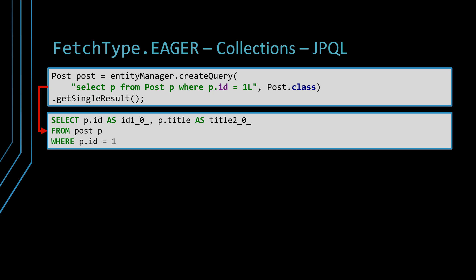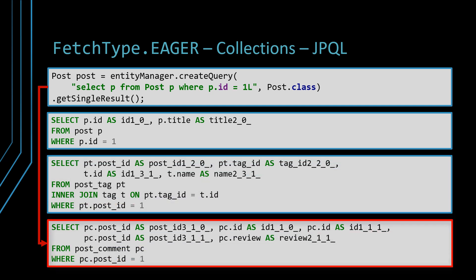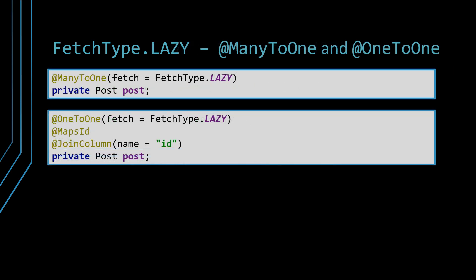On the other hand, when fetching the same Post entity using a JPQL query that omits joining the comments and tags collections, we will first get an SQL query that selects the parent Post entity, followed by an SQL query that fetches the tags collection, followed by an SQL query that fetches the comments collection. While these three queries might be more efficient than executing the previous Cartesian product, it is still less efficient than executing just the first query when that's the only entity needed by a given business use case. Therefore, for many-to-one and one-to-one associations, you need to explicitly set the fetch attribute to use the fetch type lazy strategy. If you don't do that, then the default strategy will be fetch type eager, which is bad from a performance perspective.